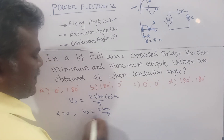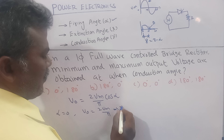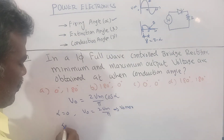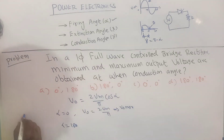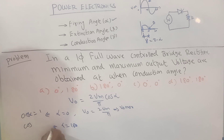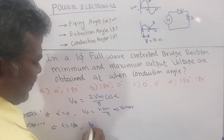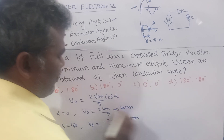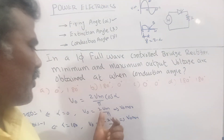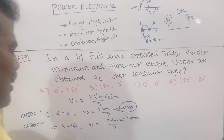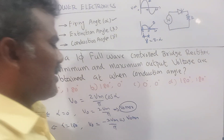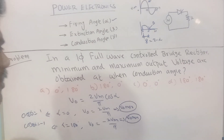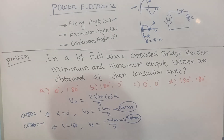When alpha equals 0, Vout maximum equals 2Vm/π. When alpha equals 180 degrees, cos(180°) equals minus 1, so V0 equals minus 2Vm/π — that is the minimum output voltage. So alpha equal to 0 gives maximum output voltage, and alpha equal to 180 degrees gives minimum output voltage.